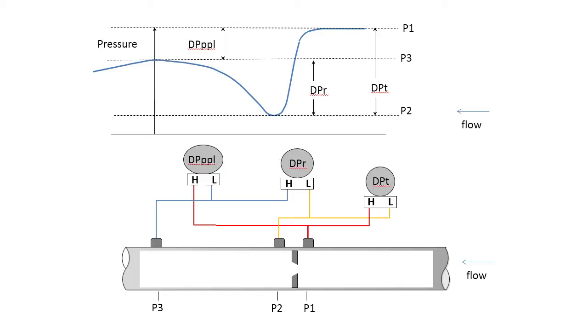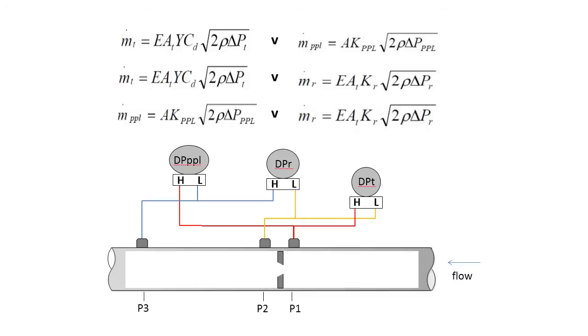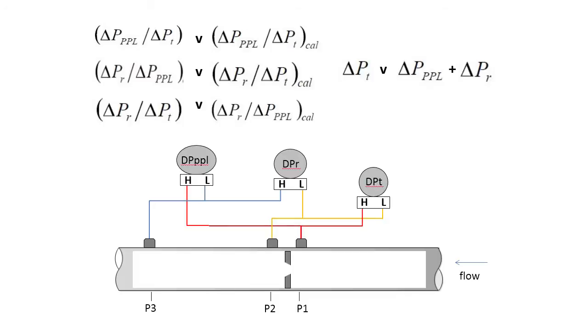Using the three DP readings, the pressure field through the meter is monitored. The three DPs are compared in multiple ways to provide assurance of correct meter operation and to identify potential malfunctions in the meter system.